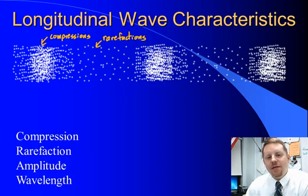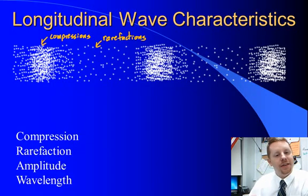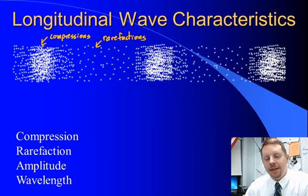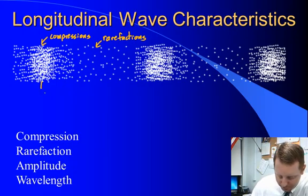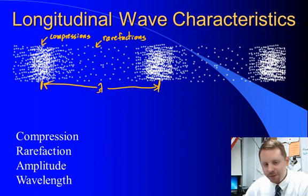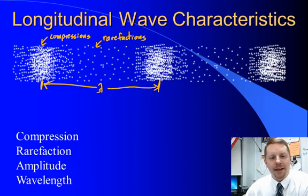Amplitude, again, is related to the energy of the wave. The more amplitude, the more energy there is in the wave. And in this case, it has to do with how dense the compressions are, and how non-dense or less dense the rarefactions are. Wavelength, we measure the same way. Take the same point on consecutive waves. So we could go from compression to compression in order to find our wavelength. Or you could go from rarefaction to rarefaction. And frequency and period apply here just as they did when we talked about transverse waves.